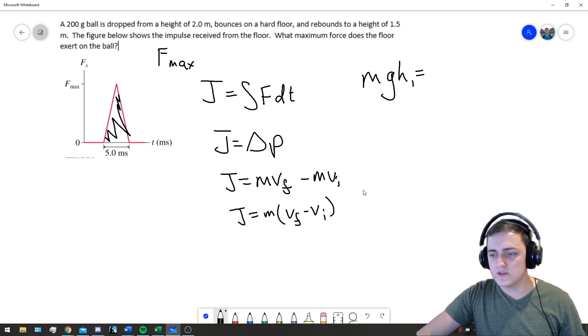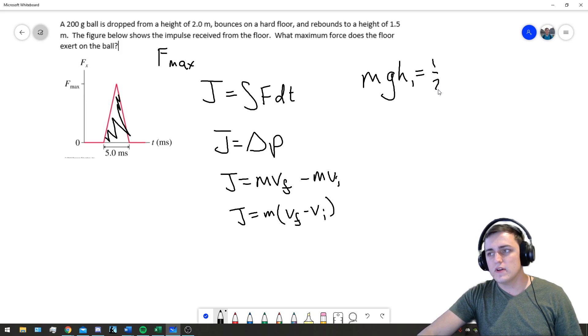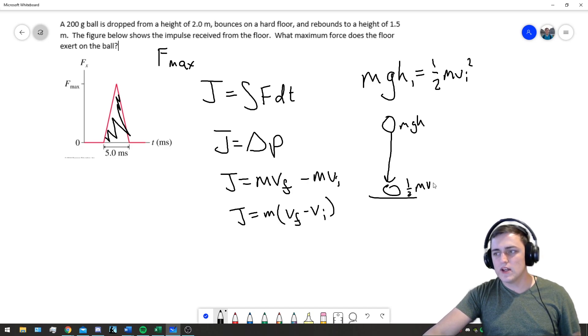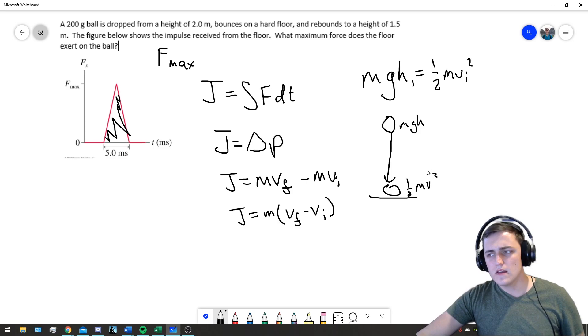It's equal to its kinetic energy, one half M v_initial squared. So what's happening is the ball is falling and hitting the ground. Here it's all potential MGH, and here it's all kinetic one half M v squared.